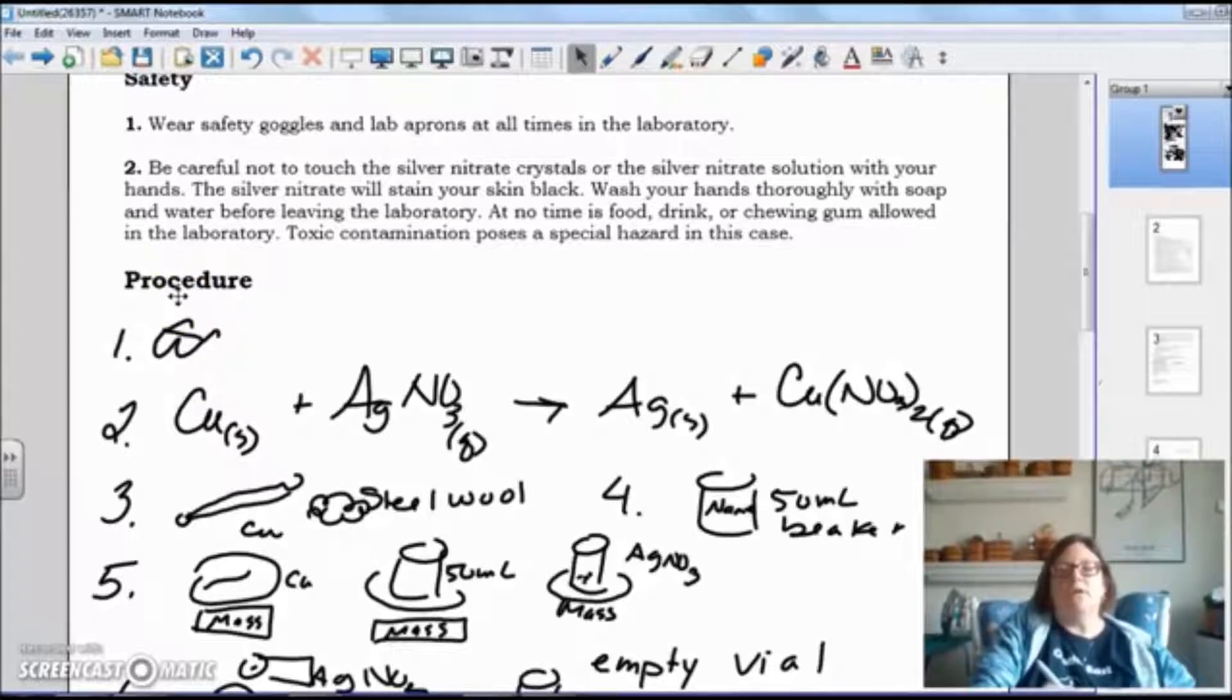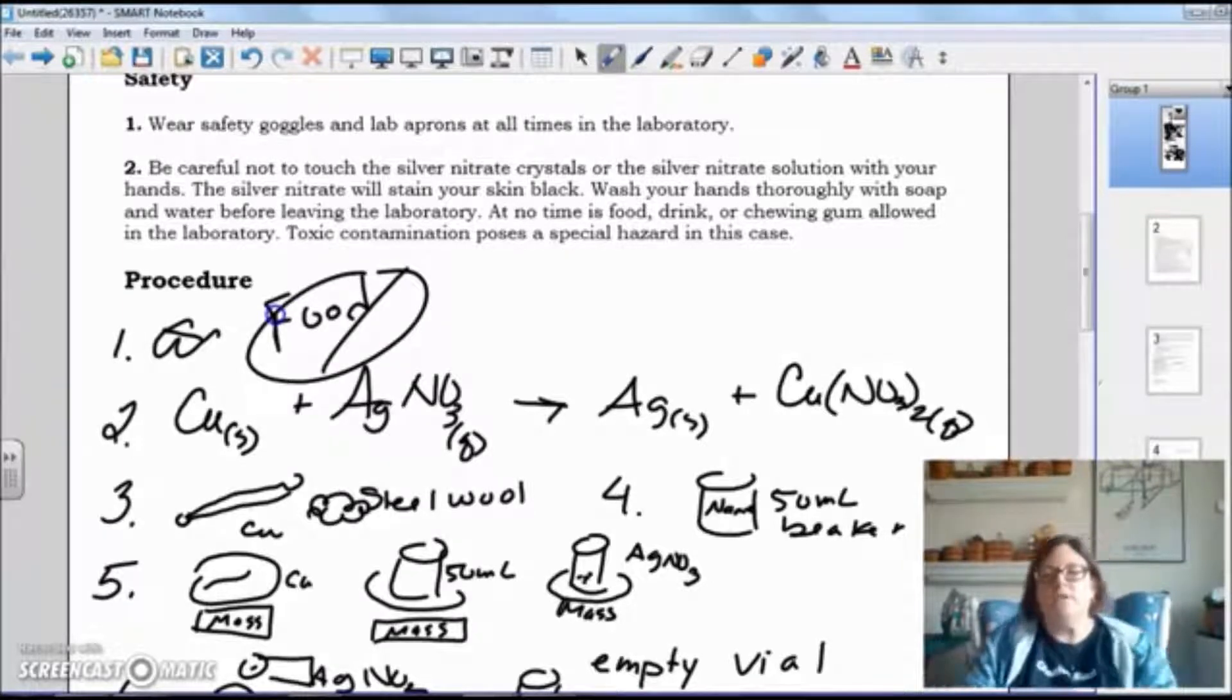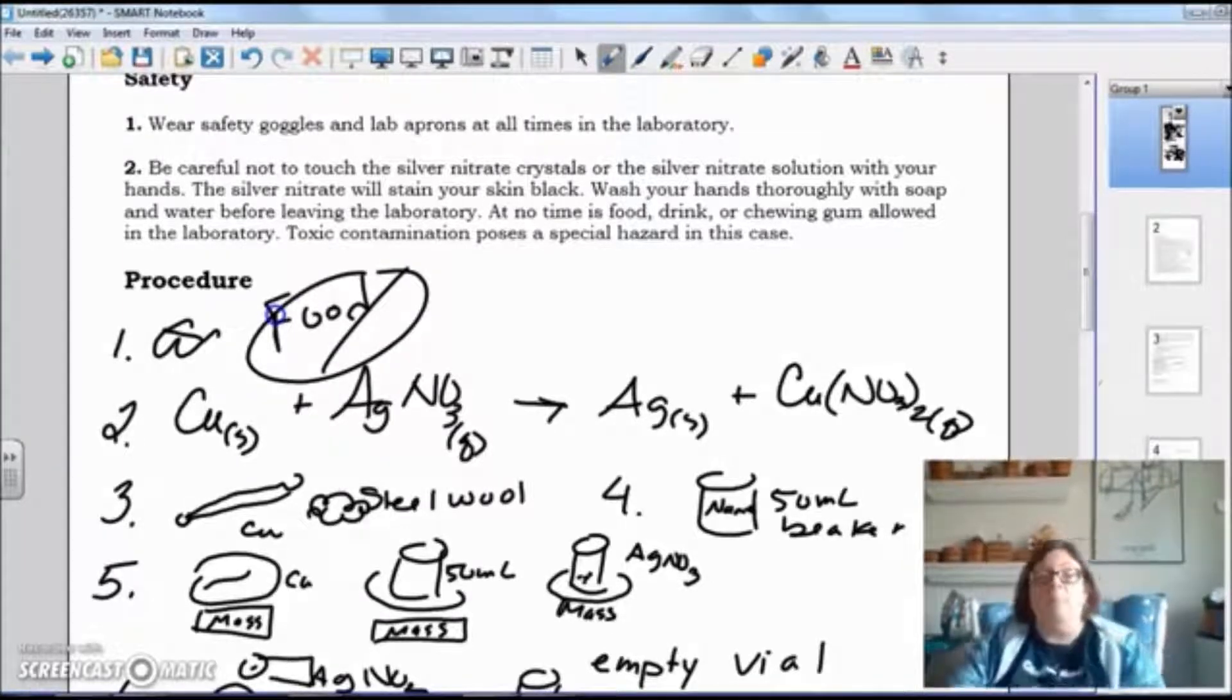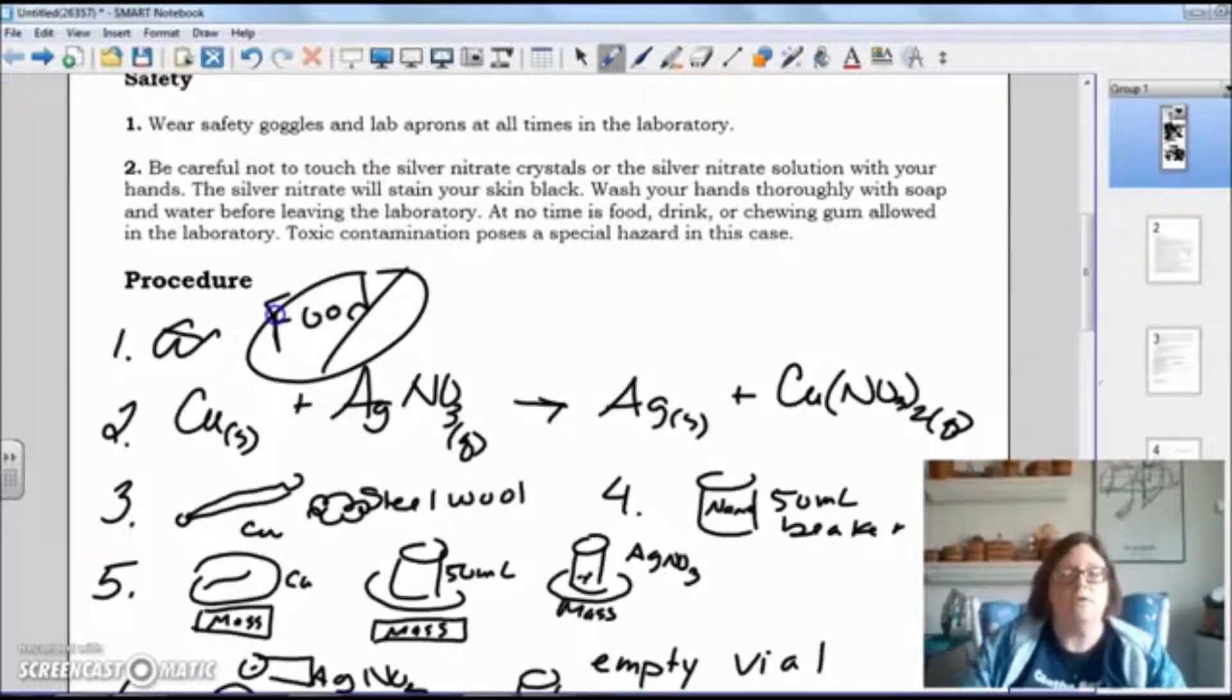safety wise, we need to have goggles on. You also cannot have any food. Nothing at the lab stations. Really shouldn't even be chewing gum. All right. The silver nitrate can be toxic, so we don't want to have any food.